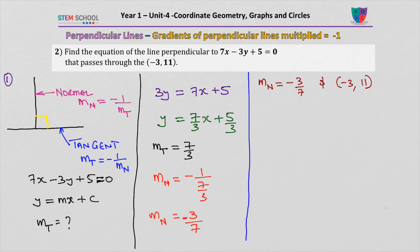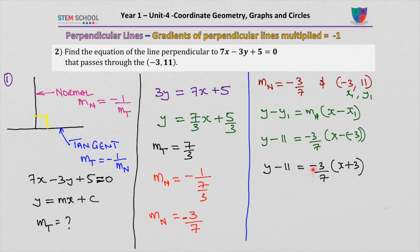There's an equation we can use here: y minus y1 equals m normal into bracket x minus x1. This is my x1 and this is my y1, so y minus 11 equals minus 3 over 7 into bracket x minus minus 3, which gives y minus 11 equals minus 3 over 7 open bracket x plus 3 close bracket.